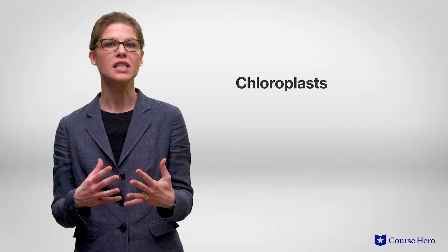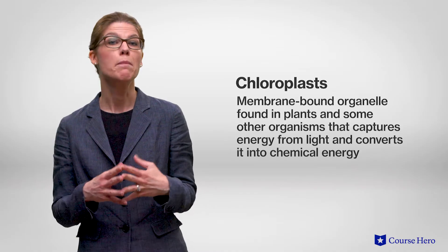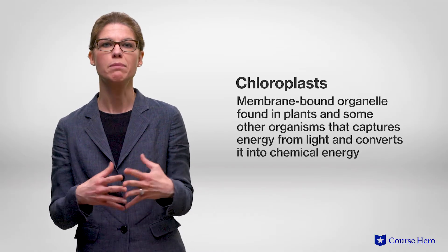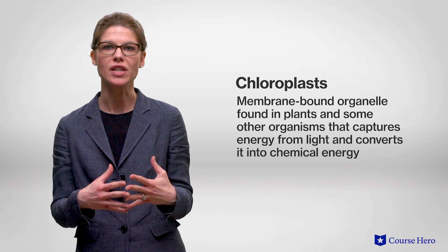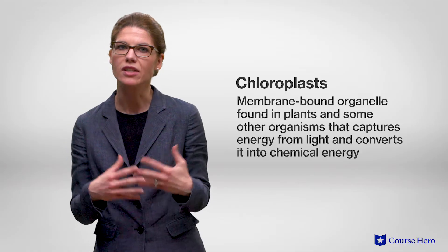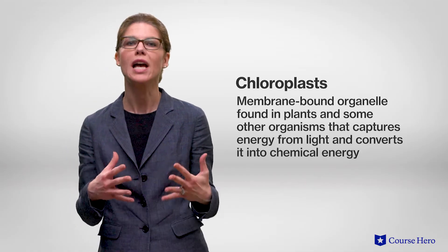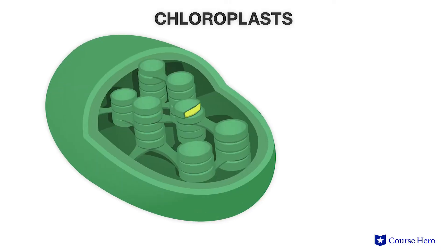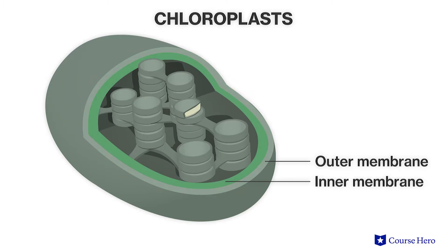Photosynthetic organisms contain chloroplasts — membrane-bound organelles found in plants and algae that capture energy from light and convert it into chemical energy. Let's take a closer look at the structure of a chloroplast. A chloroplast consists of two membranes, an outer membrane and an inner membrane, surrounding the stroma, a fluid inside chloroplasts that contains thylakoids.